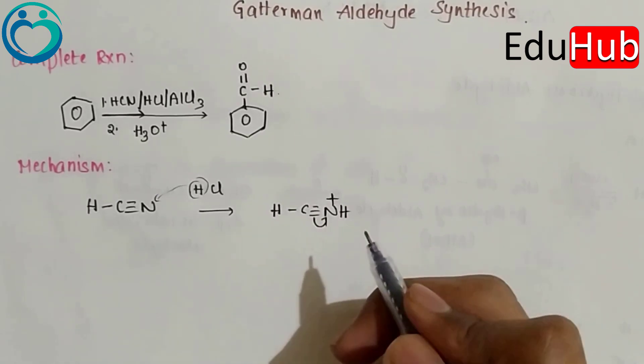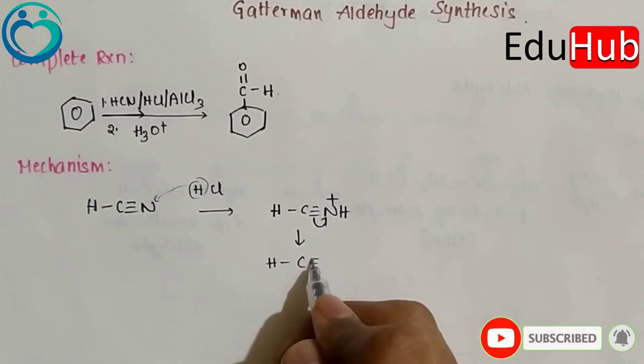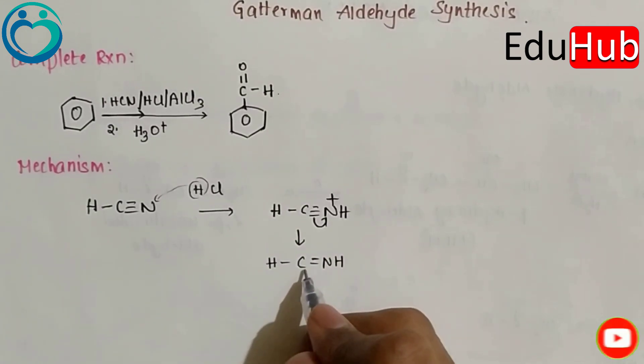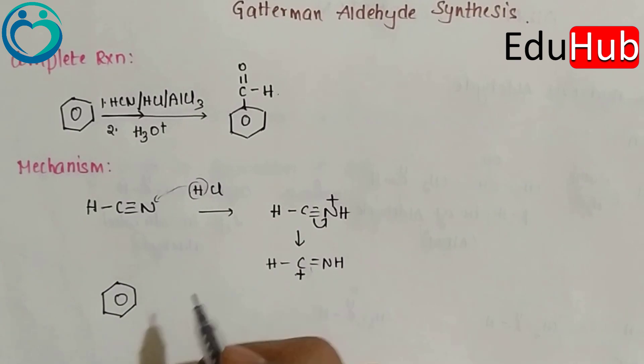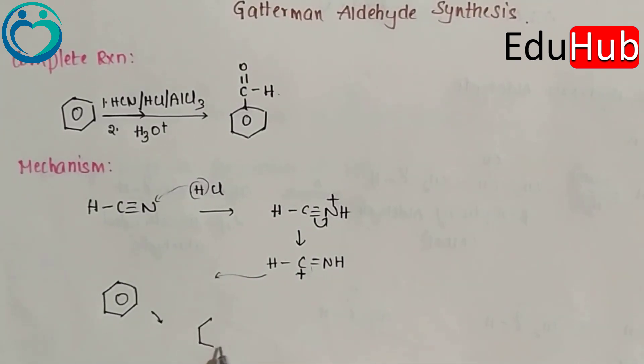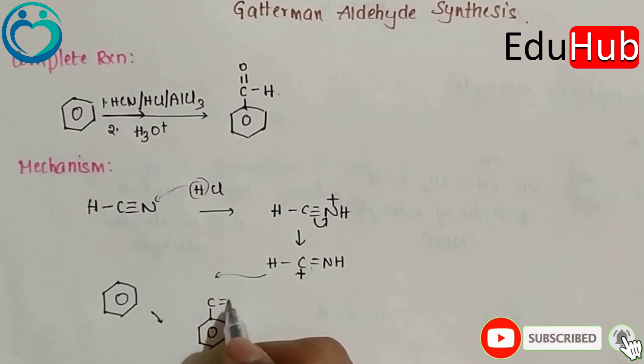This bond breaks and forms HC double bond NH. And as we broke this side, there's C+. This as a whole will attack on benzene and forms C double bond NH.